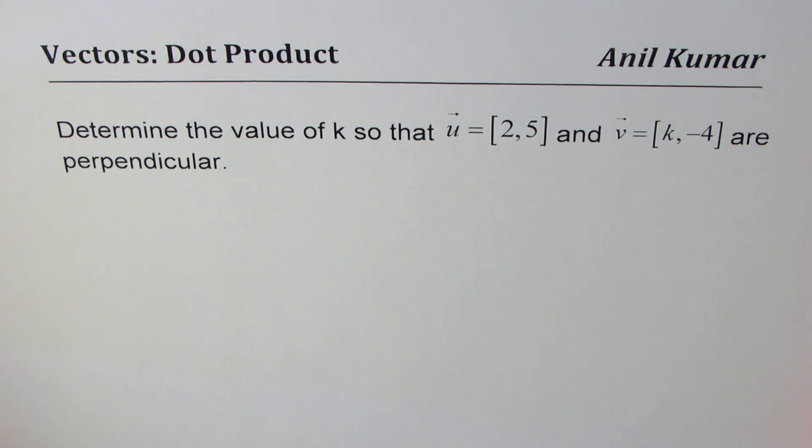Determine the value of k so that vector u = [2, 5] and vector v = [k, -4] are perpendicular.